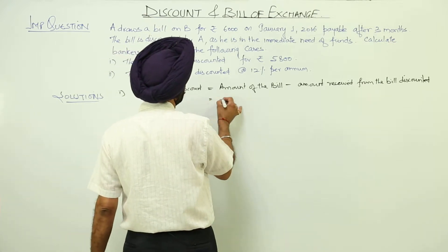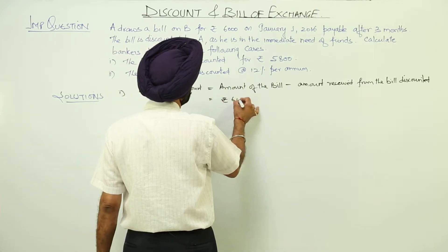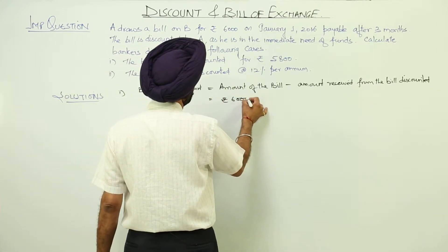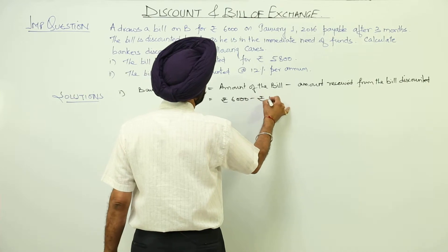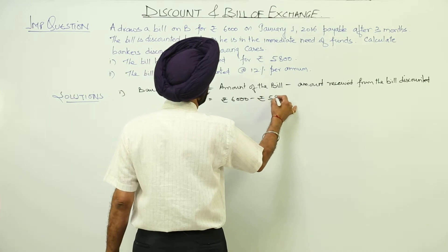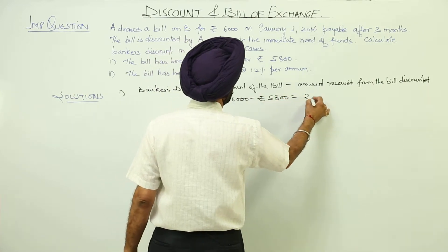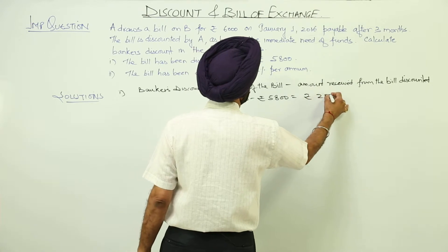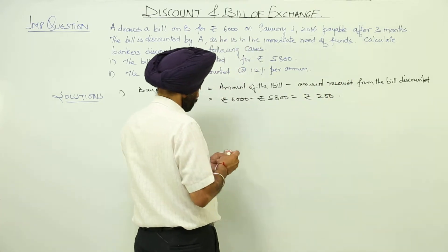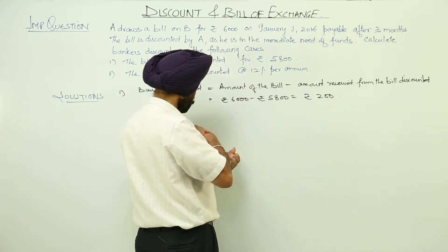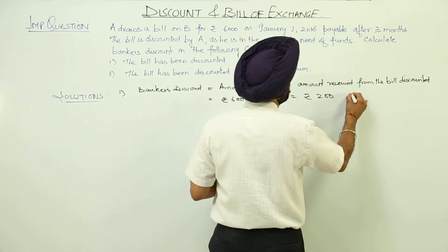So we are having Rs. 6000 minus Rs. 5800, which is equal to Rs. 200. So this is the first answer.